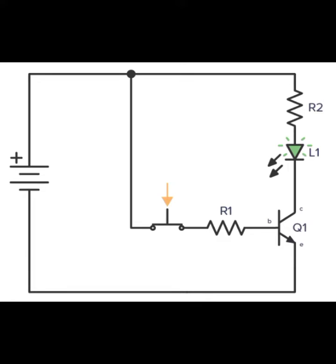When a signal is given between base and emitter terminal of the transistor, the transistor gets on. If we didn't give signal between base and emitter terminal, the transistor is in off state.